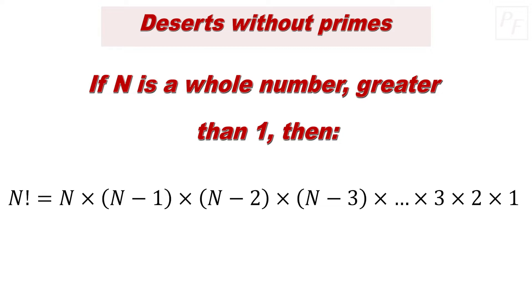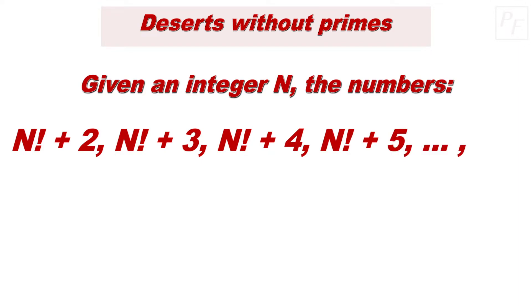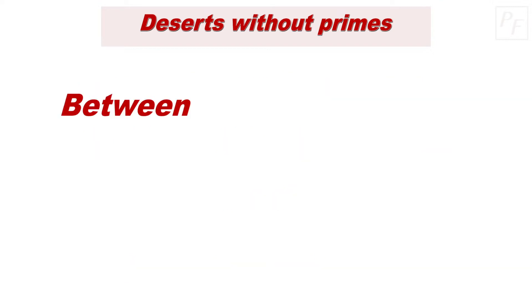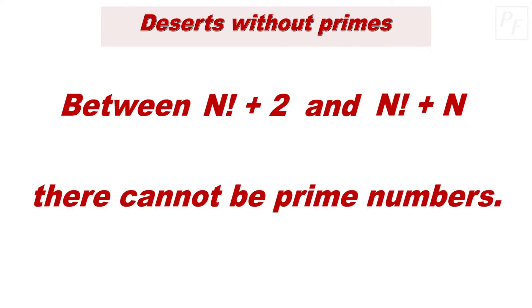Well, by the example seen, given an integer n, the numbers n factorial plus 2, n factorial plus 3, n factorial plus 4, n factorial plus 5, etc., n factorial plus n cannot be primes. Thus, between n factorial plus 2 and n factorial plus n there cannot be prime numbers.